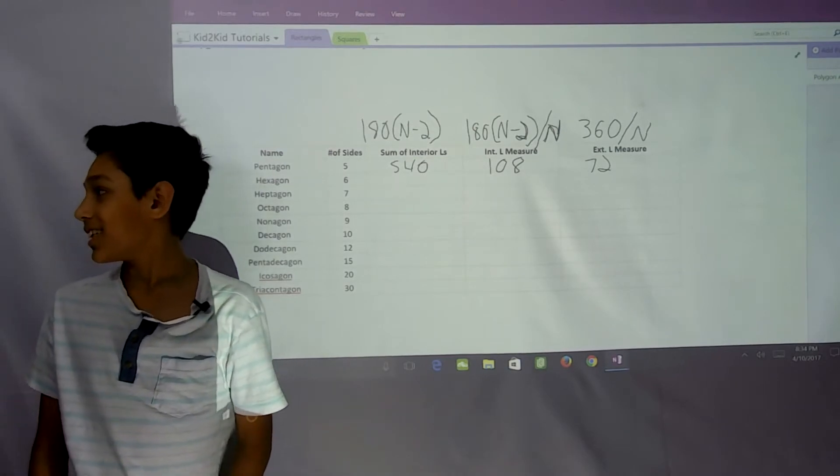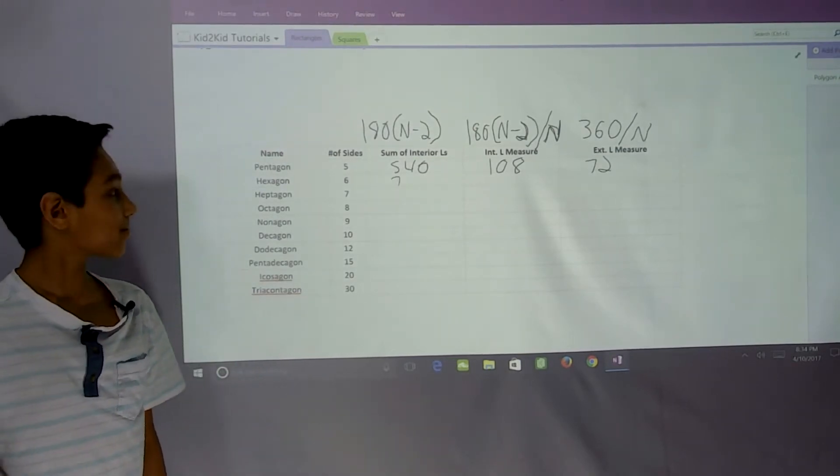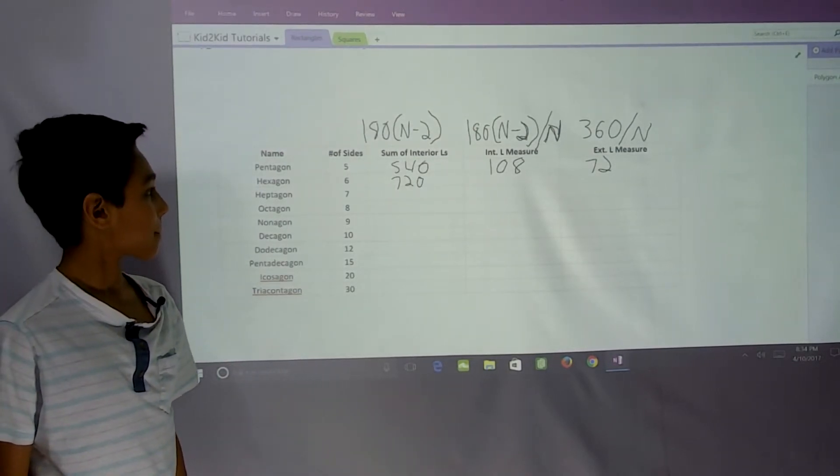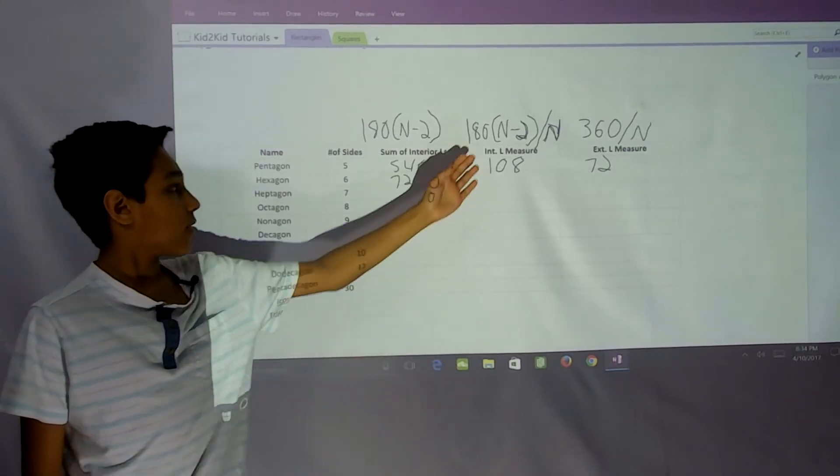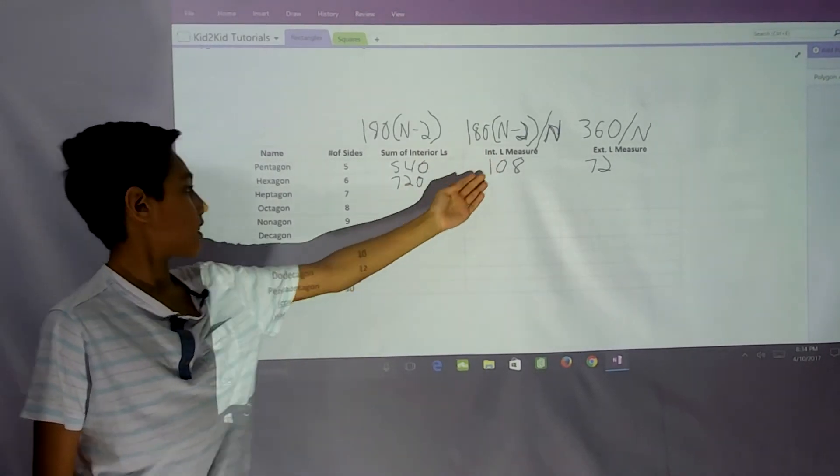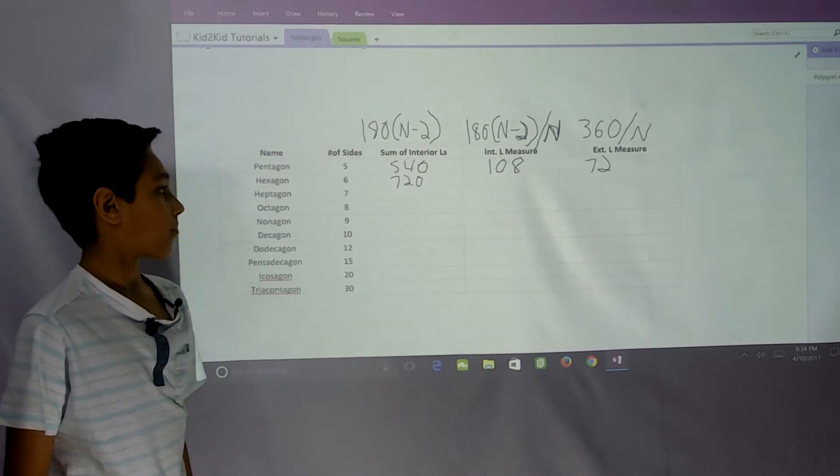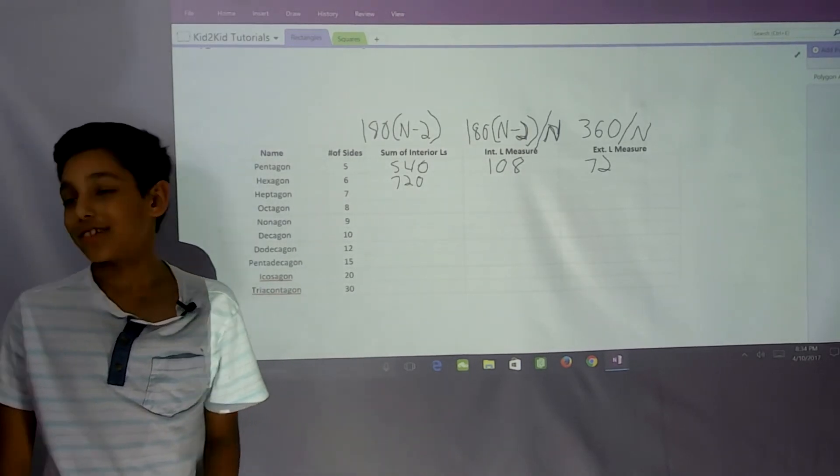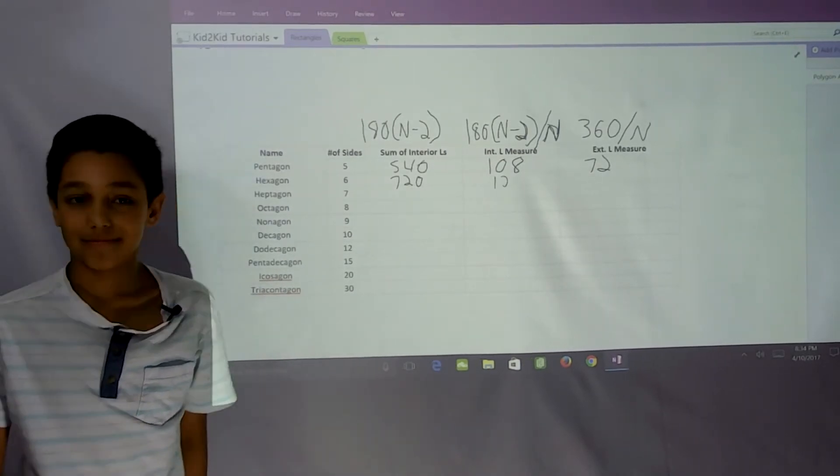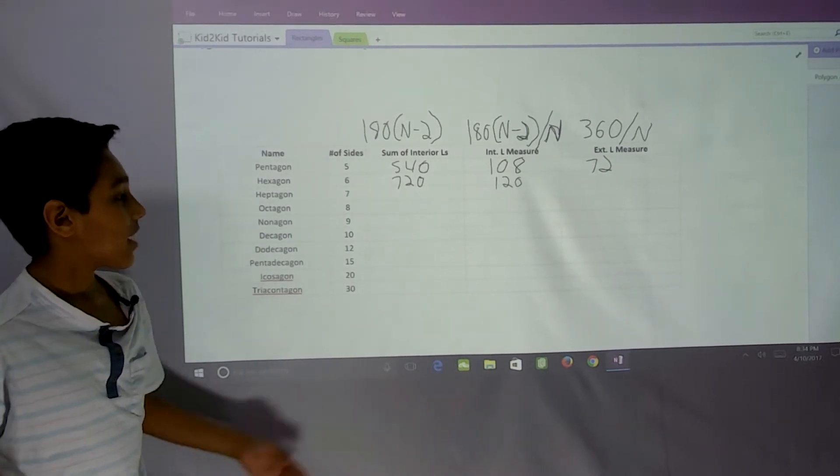Then we have 180 times (6 minus 2), which is 4, divided by 4, and that equals 120 degrees.